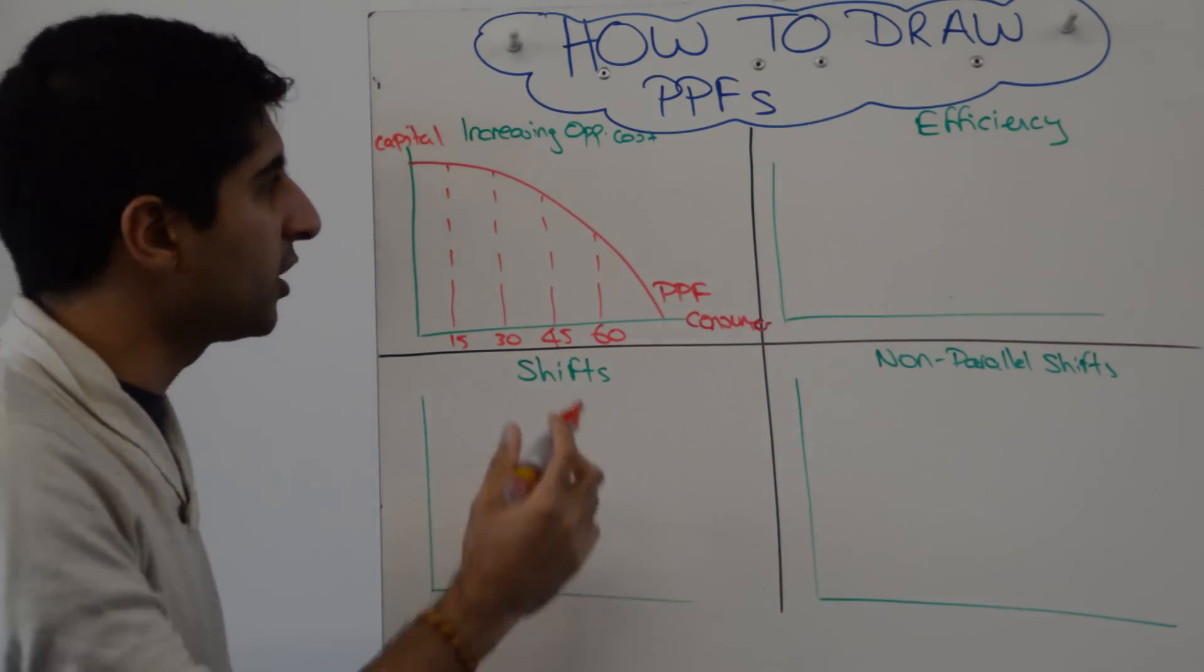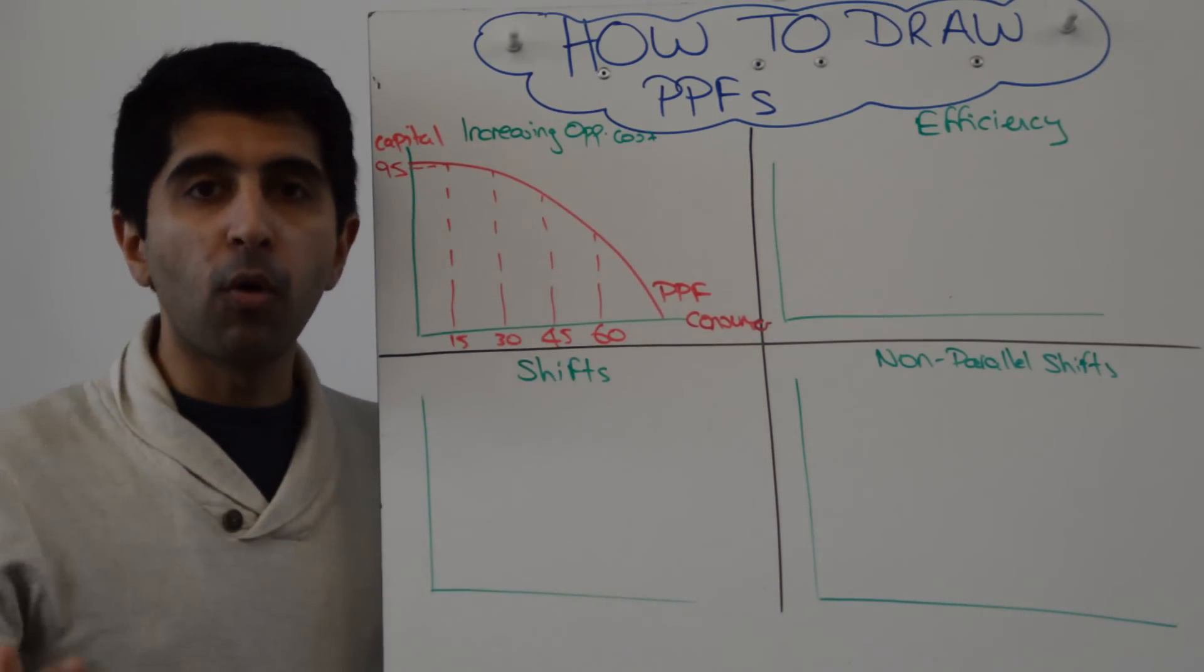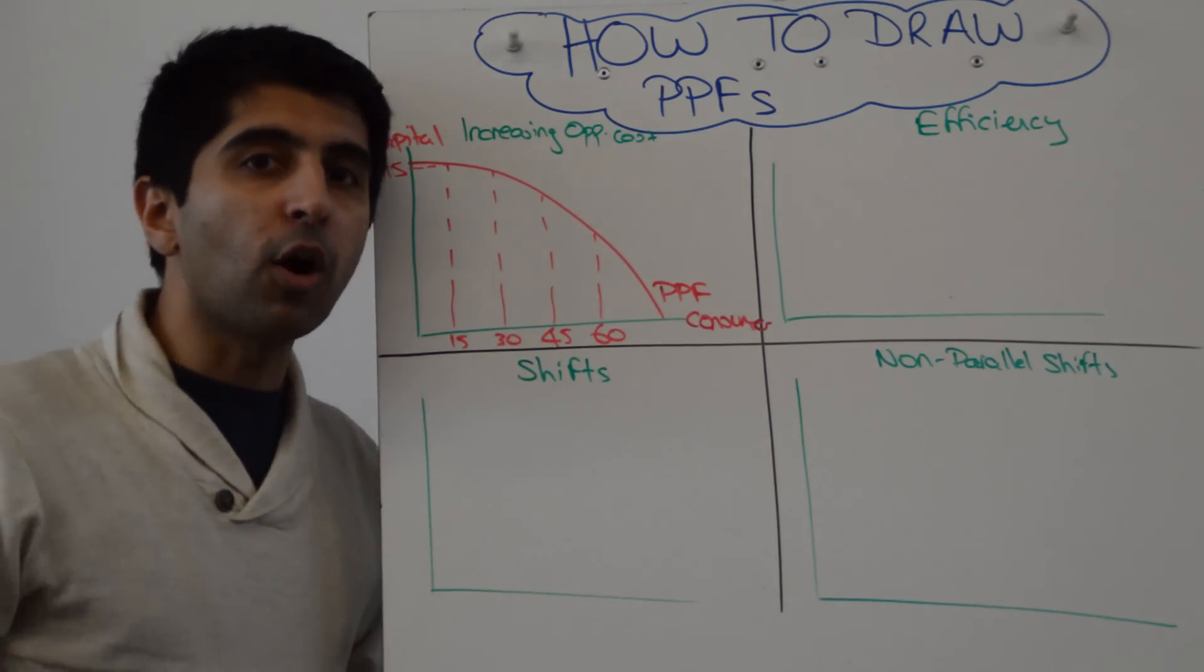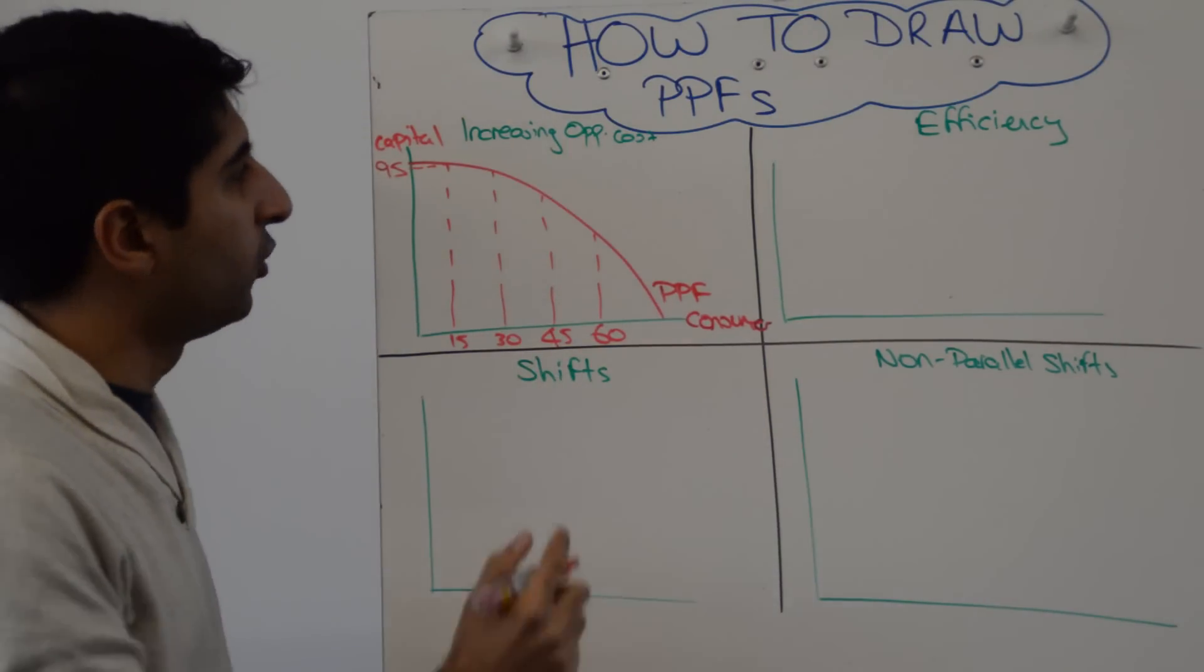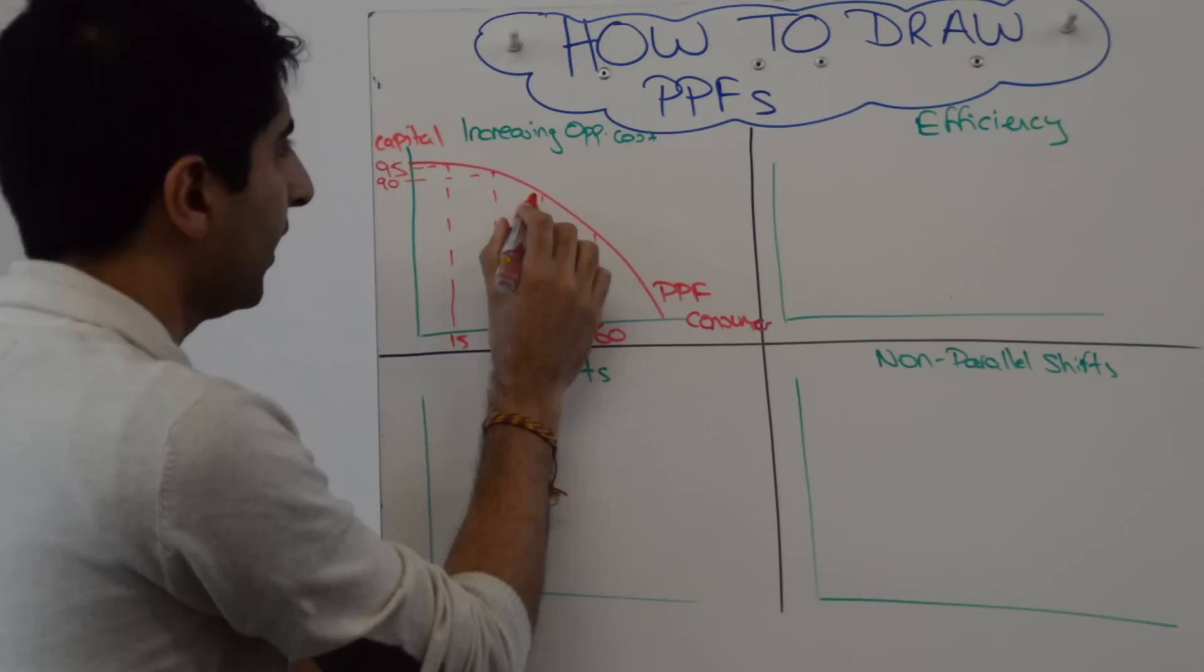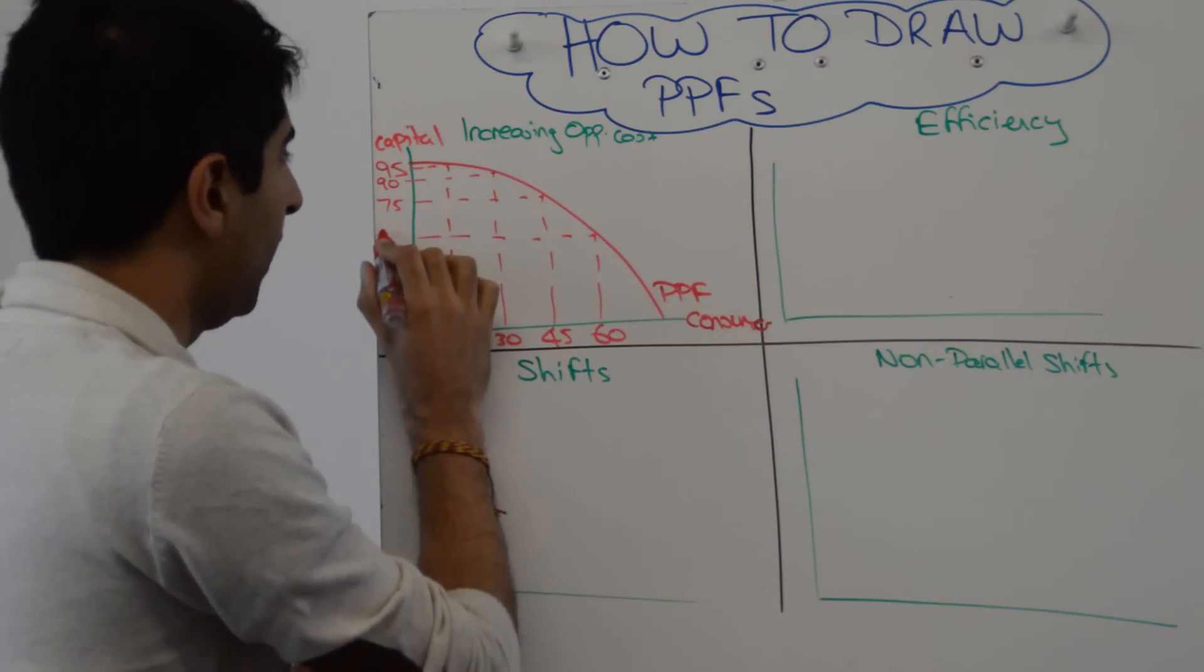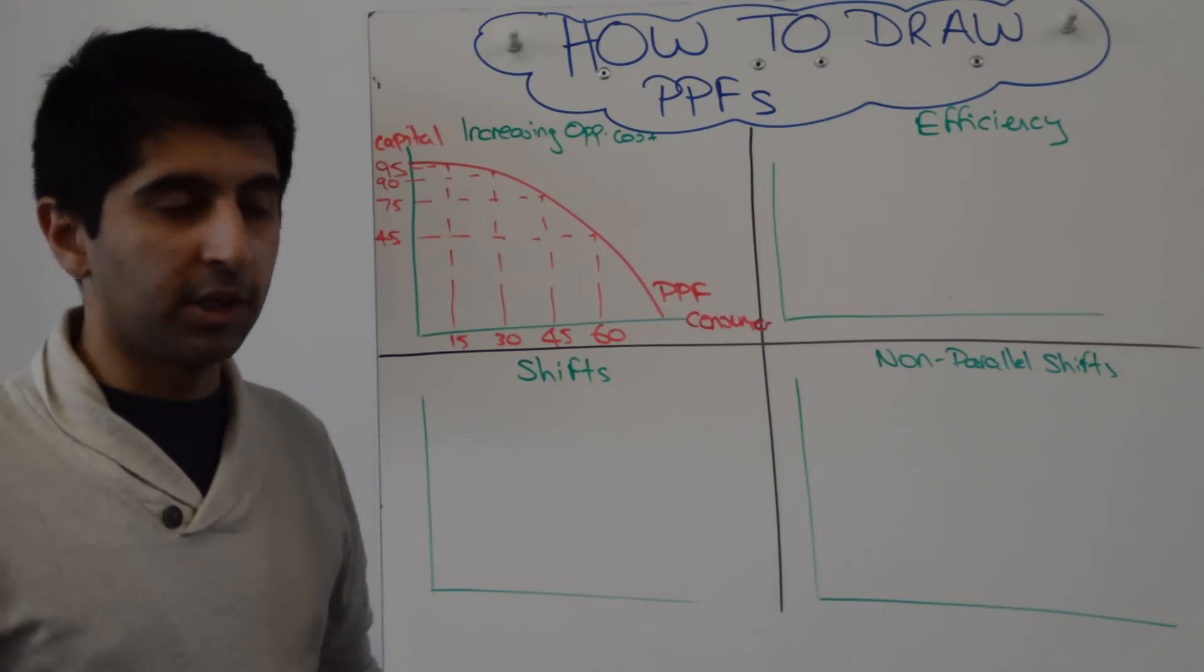I'm going to start here and assume that's 15 consumer goods. I'm going to increase each time by 15: 30, 45, 60. I've got a 15 unit increase each time and then just show how we're giving up more and more capital goods each time. As long as you're showing increasing opportunity cost as we're increasing the production of consumer goods, you've done the job. Maybe the first increase was 95 to 90, the second increase was 90 to 75, and the third increase was 75 to 45. You've got increasing opportunity cost being shown there.